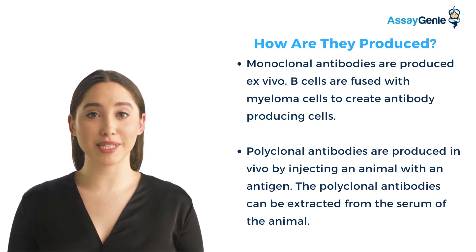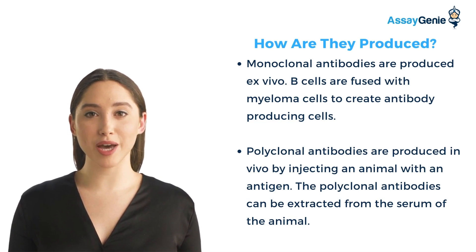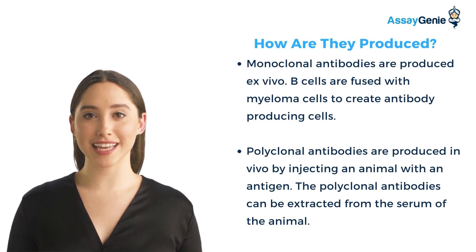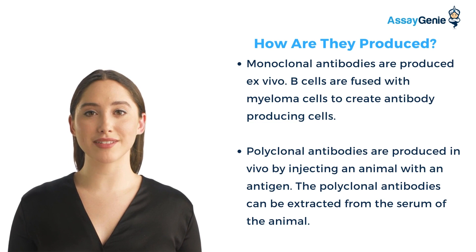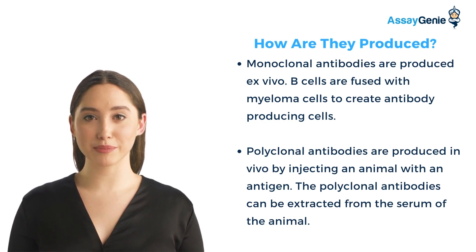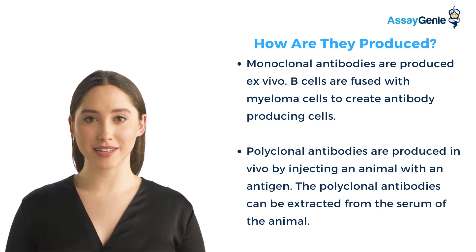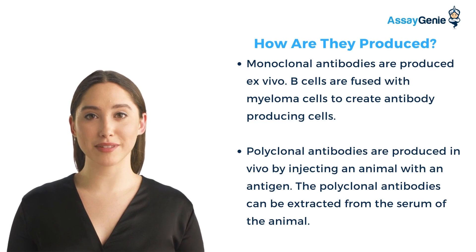Creating immortalized B cell myeloma hybridomas, the antibody-producing hybridomas are then screened for the desired monoclonal antibody. Polyclonal antibodies are produced in vivo by injecting an animal with an immunogen. After being injected with a specific antigen to elicit the immune response, the animal is given subsequent immunizations to produce higher quantities of antibodies against the antigen. Polyclonal antibodies can be obtained straight from serum.